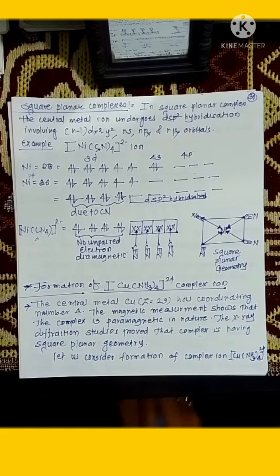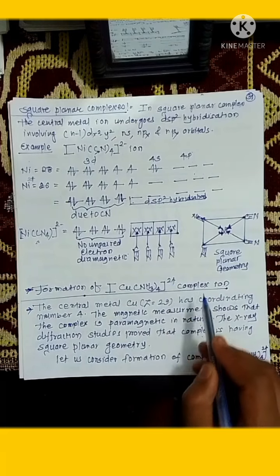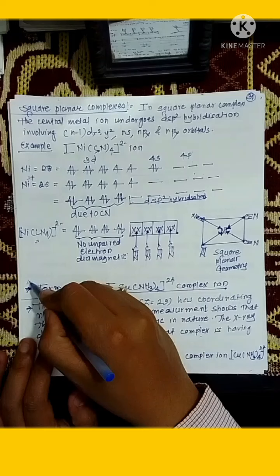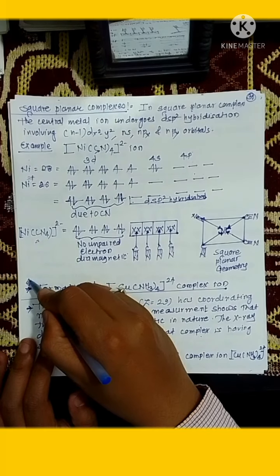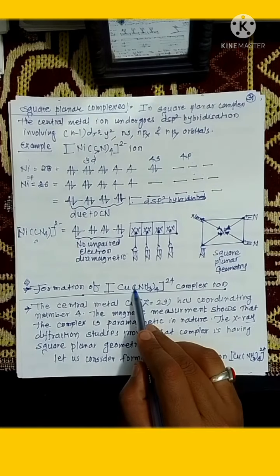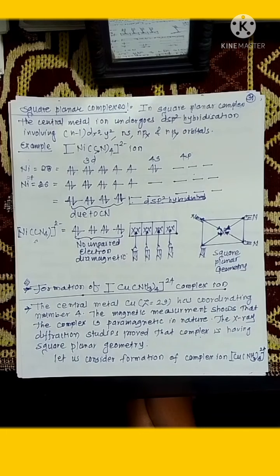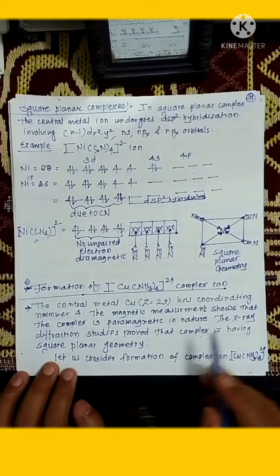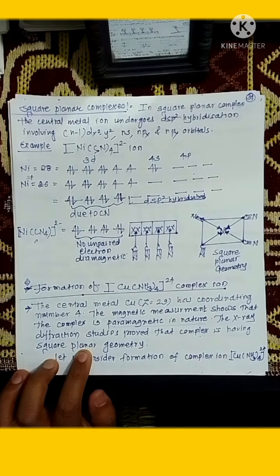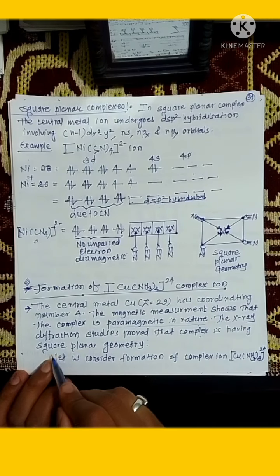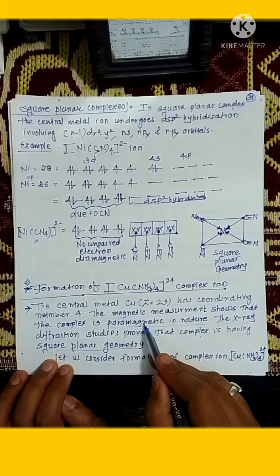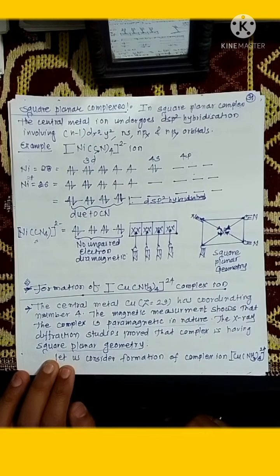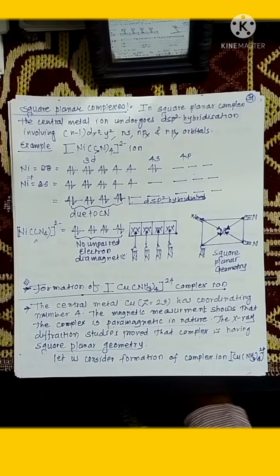Now we are going to see the formation of the Cu(NH3)4 2+ complex ion. This is an interesting and exceptional question, so it is generally asked in exams. Before studying the hybridization of this molecule, we first need to know some experimental data. Magnetic studies show that this complex is paramagnetic in nature, and X-ray diffraction shows it has square planar geometry. These two facts are obtained from experiment.